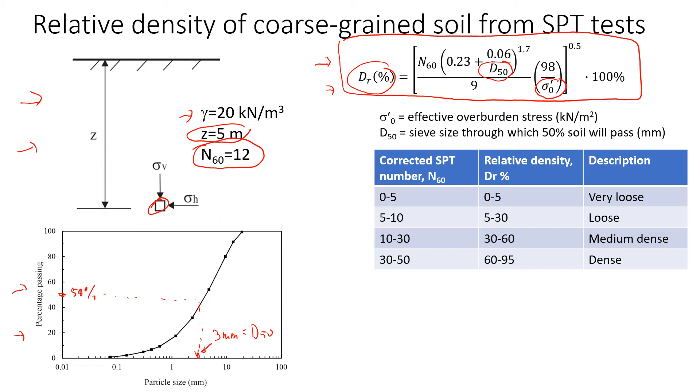And now we're going to find the effective stress. So we know that the depth at which we perform this test is 5 meters. Let's make it a little more interesting and let's introduce ground water level. We're going to put it here, and we're going to say that the distance from the surface to the ground water level is 2 meters.